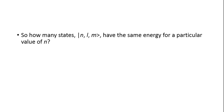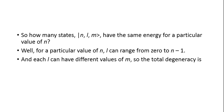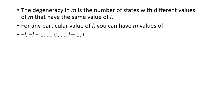For a particular value of n, L can range from 0 to n minus 1, and for each value of L, m can take different values. The total degeneracy is equal to the sum from L equal to 0 to n minus 1 of the degeneracy in m. The degeneracy of m is the number of states with different values of m having the same value of L. For a particular value of L, m can have values from minus L to plus L.